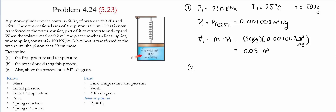For the second state, the volume reaches 0.2 meter cubed. Using the assumption that the pressure remains constant from the initial state, pressure 2 is equal to 250 kilopascals.